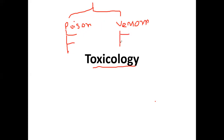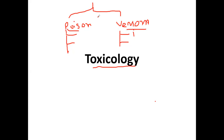Venoms are mostly injected when some creatures bite us, like snake bites or spider bites. Venoms are substances injected into us, which may also include drugs — for example, if the dose of lignocaine is increased, that may cause a lot of problems, since lignocaine is a positive inotropic and negative chronotropic agent.